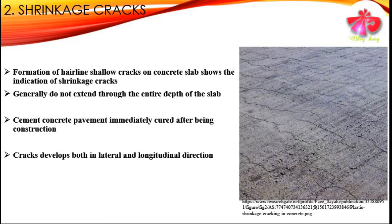The second type of failure pattern is the formation of shrinkage cracks. Shrinkage cracks are hairline, shallow cracks on the concrete slab and generally do not extend through the entire depth of the slab. They occur due to the cement concrete pavement not being properly cured immediately after construction, and the cracks develop in both the lateral and longitudinal directions during the shrinkage process.